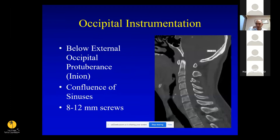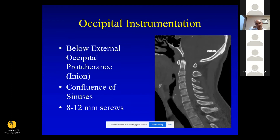Occipital instrumentation is not something you do every day. The thickest part of the bone is just below the inion — the external occipital protuberance — and you want the plate to sit just below it. That's also where the confluence of sinuses is. Screws are typically 8 to 12 millimeters. You can get a rush of blood if you enter the sinus, or even a CSF leak — if that happens, just place the screw to tamponade it. Be careful when drilling.